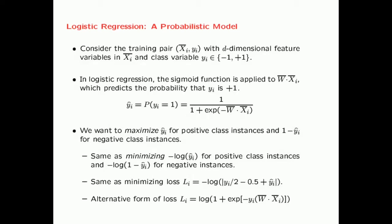We can convert this into log likelihood form, which is common in probabilistic models. Maximizing Y_i-hat is the same as minimizing minus log Y_i-hat, and similarly, maximizing 1 minus Y_i-hat is the same as minimizing minus log(1 minus Y_i-hat) for negative instances.